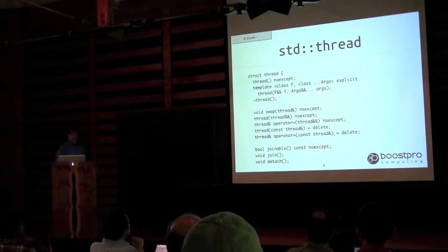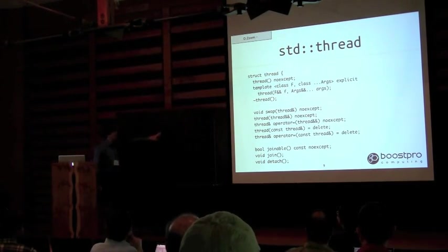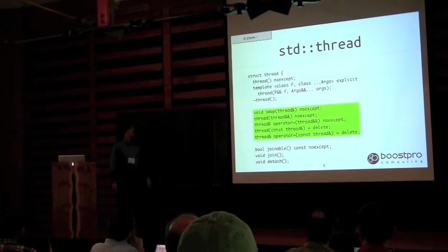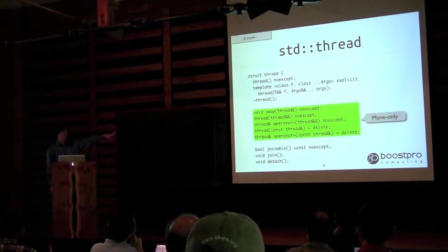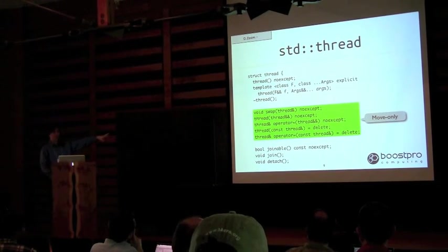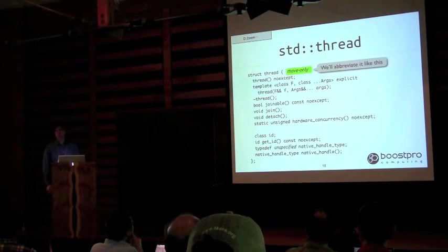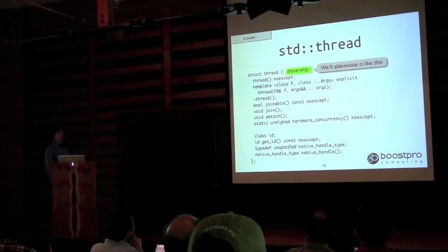Here's the header declaration for std::thread. All of this has to do with the movability of threads — I'll just call it 'move only.' You're going to see in several of the different objects I present that some are move only and some are copyable. That's how I'm going to indicate it rather than showing you all those methods.